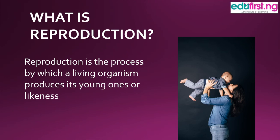Now, what is reproduction? Reproduction is the process by which a living organism produces its young ones or likeness. Like the two chickens — the male and the female — coming together and mating to reproduce another younger one, that is what we call reproduction. It is a process where your father and your mother come together to give birth to you. So when your mom is pregnant and she gives birth to another baby, that is what we call reproduction.